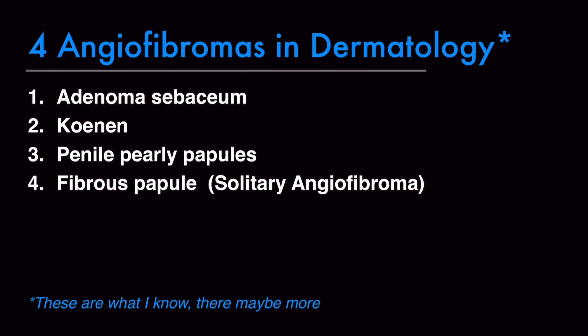There are other angiofibromas in dermatology. At least four are known: adenoma sebaceum in tuberous sclerosis, Koenen tumors or periungual fibromas also in tuberous sclerosis, pearly penile papules, and fibrous papule of the face — also called solitary angiofibroma. These are the four angiofibromas in dermatology.